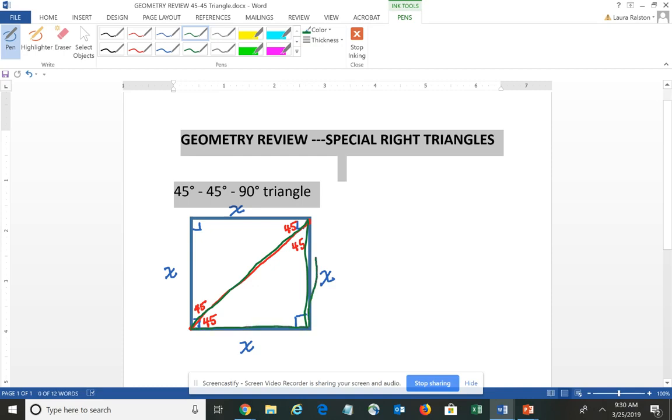Now we have a 45-45-90 triangle, and we know that each leg has a length of X. What we do not know is the hypotenuse, which is represented by the diagonal. So this is our unknown, I'm going to use D for diagonal. We don't know what that equals.